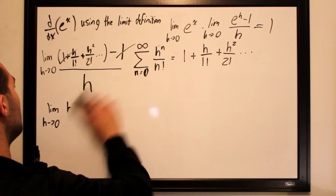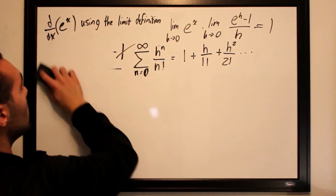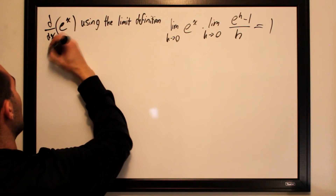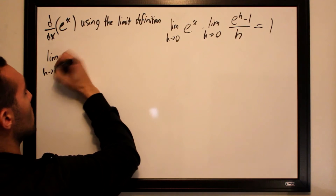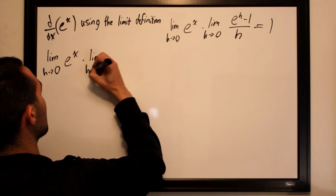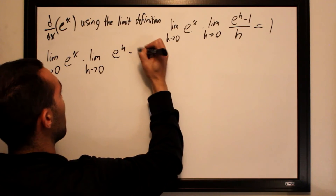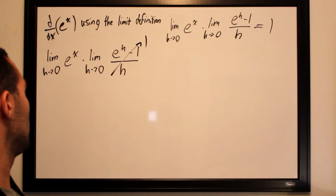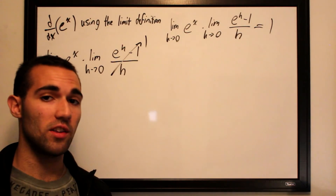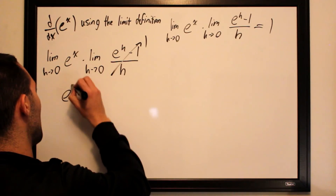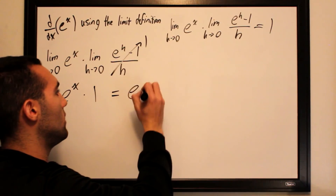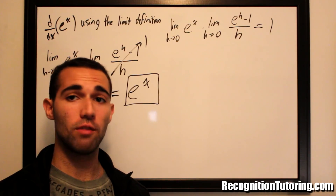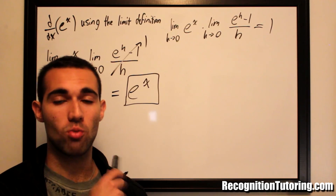Tying it all back together: we have the limit as h approaches 0 for e to the x, times the limit as h approaches 0 for e to the h minus 1 over h, which we just proved equals 1. So this becomes e to the x times 1, which is e to the x. And that is the derivation of the derivative of e to the x using the limit definition. Hope you enjoyed — truth be told, I had a really tough time figuring this one out.